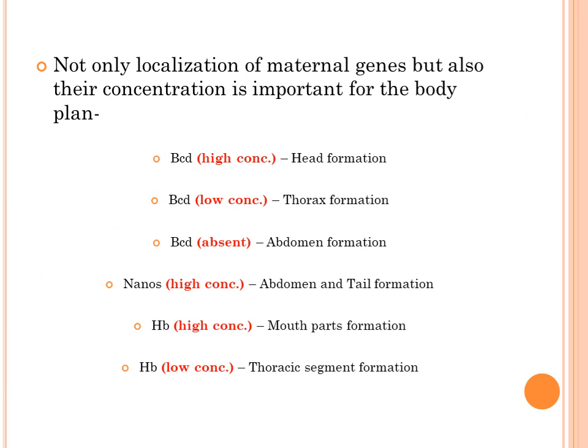Maternal genes का localization ही नहीं, बल्कि उनका concentration भी role play करता है कि कौन सा structure बनेगा। Bicoid अगर high concentration में है तो वो head formation में role play करेगा। Bicoid का अगर low concentration है तो thorax का formation करेगा। वहीं अगर bicoid absent है, तो उस जगह abdomen का formation होगा। Nanos अगर high concentration में है तो abdomen और tail का formation करेगा। Hunchback high concentration में होने पर mouth part का formation करता है, जबकि hunchback low concentration पर thoracic segment formation में role play करता है।